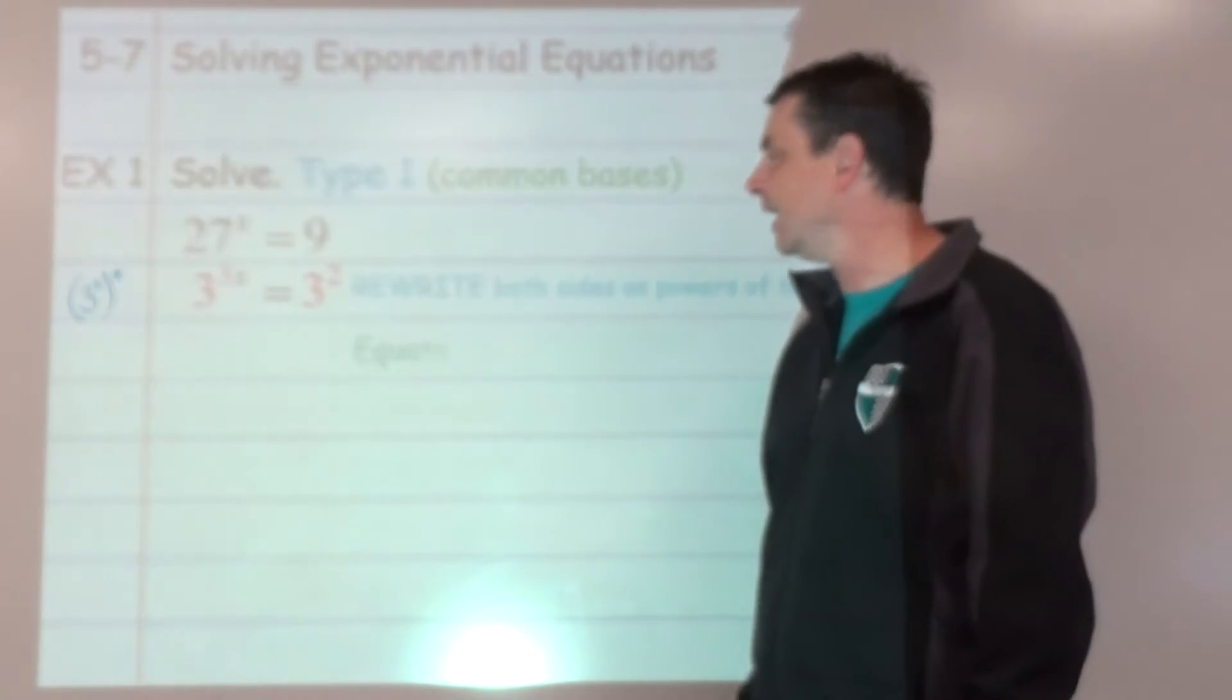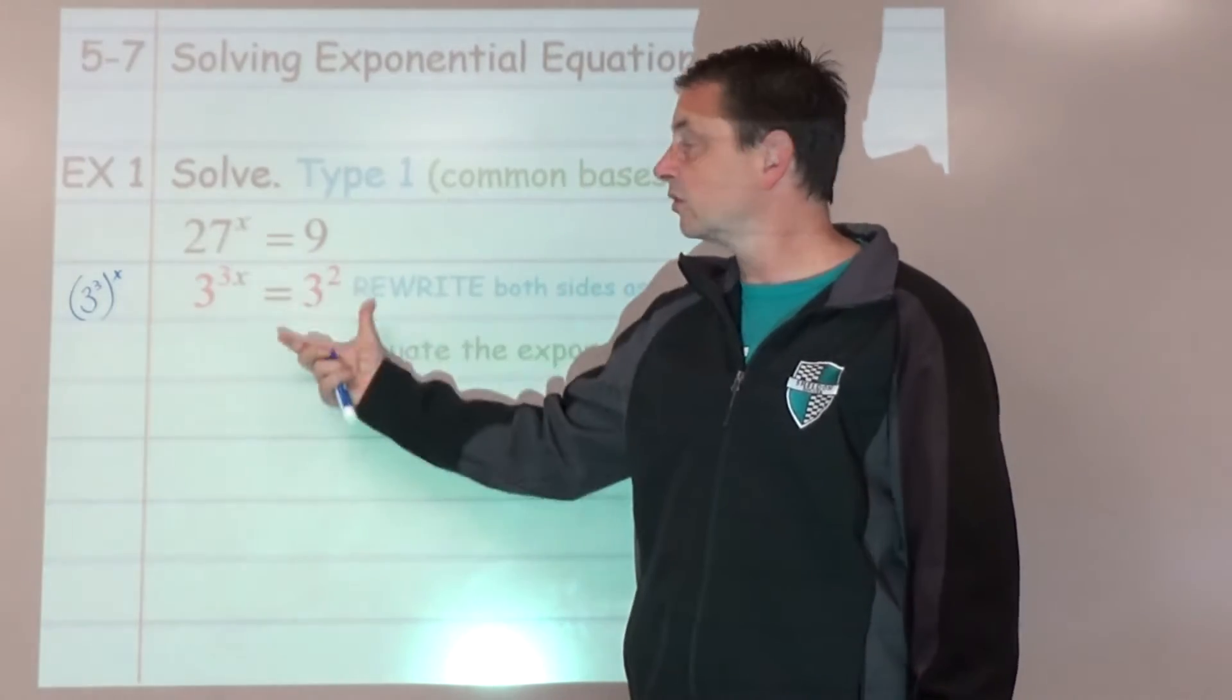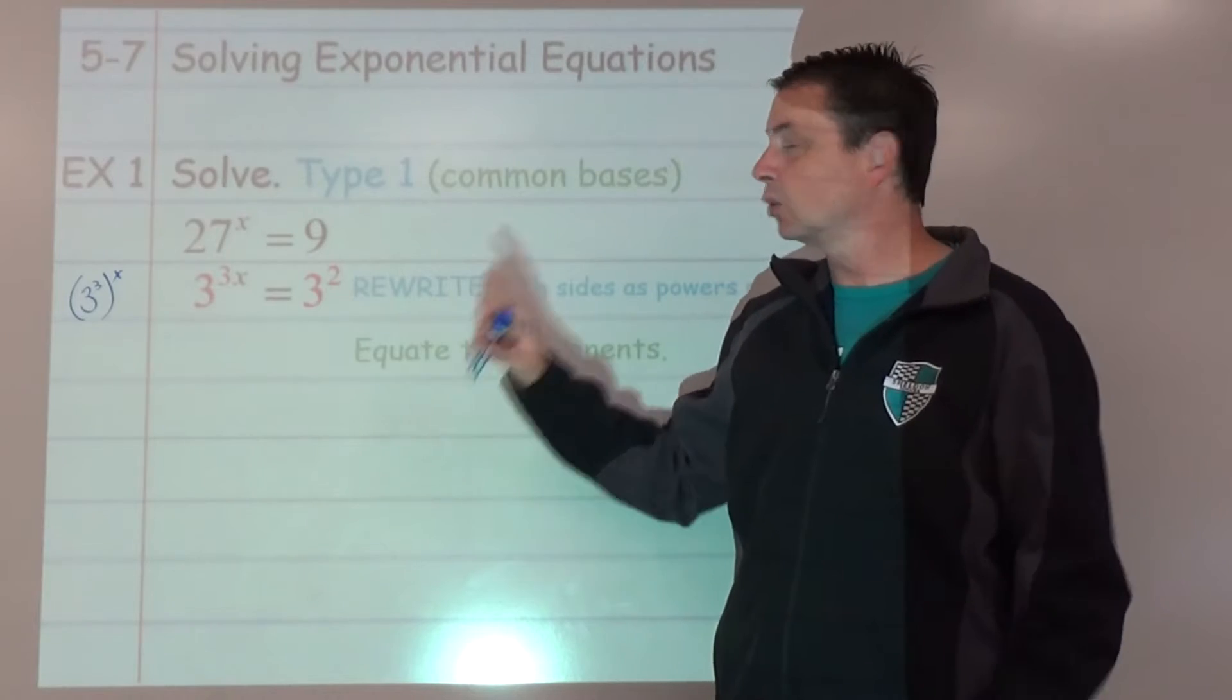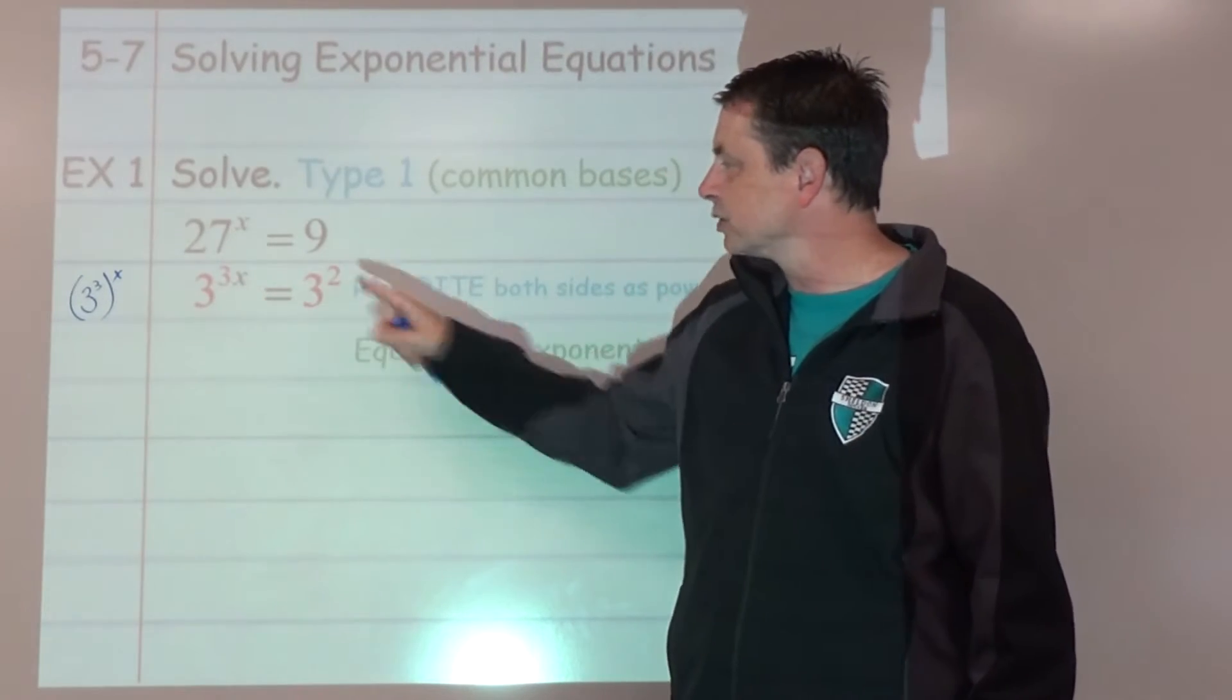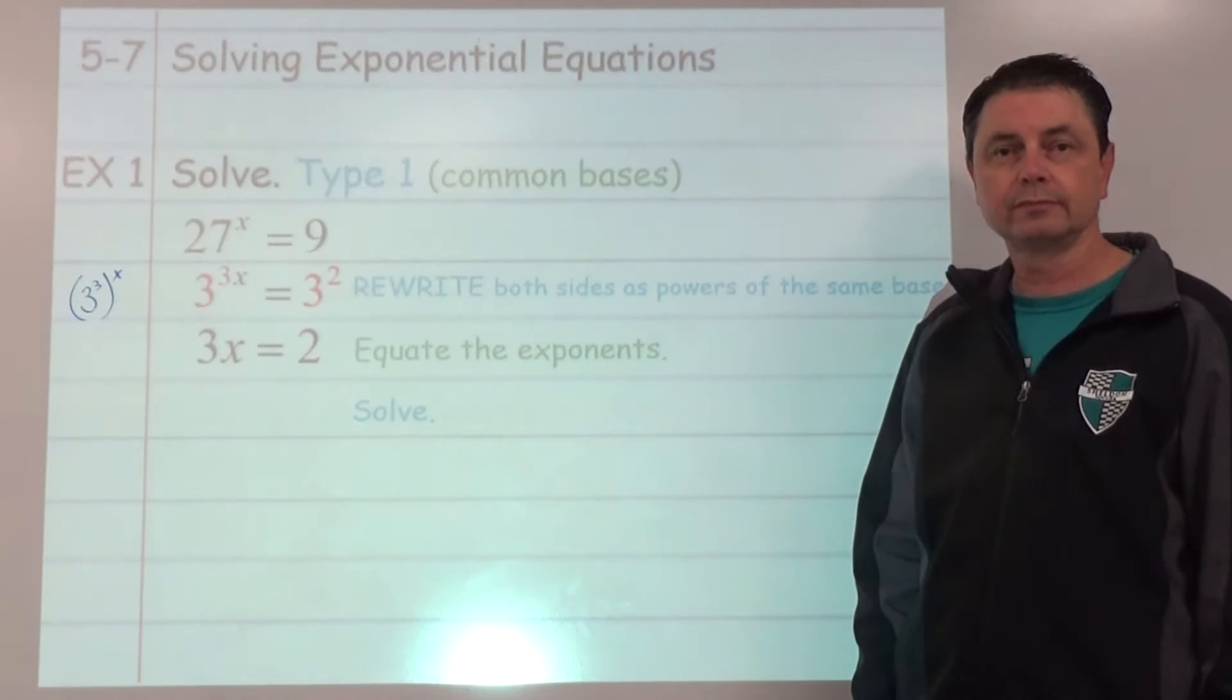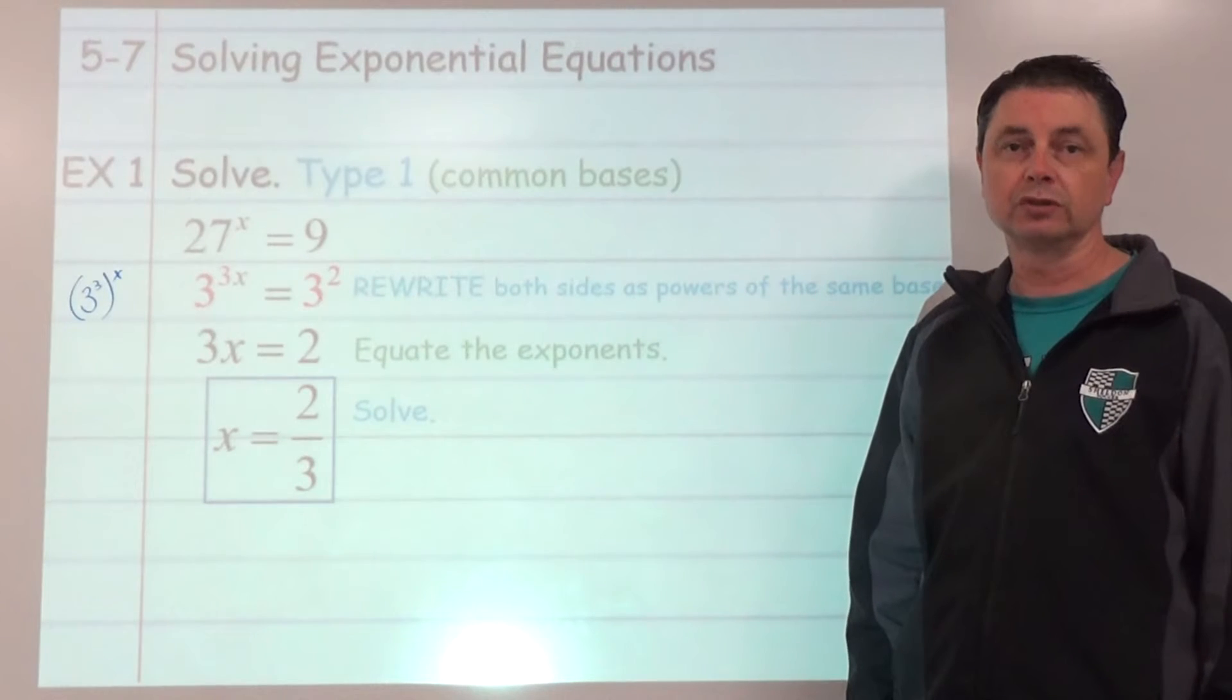Once we've done that, we can equate the exponents. Because if the bases are the same, in order for this to be a true equation, the exponents also must be equal. So we can ignore the bases and say exponent equals exponent: 3x equals 2. Now we're going to solve for x. Divide both sides by 3. x equals 2 thirds. That's our solution.